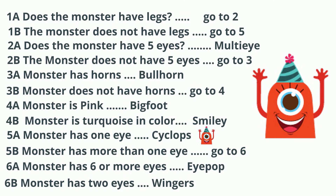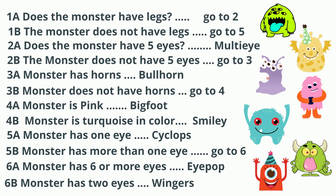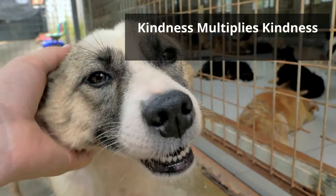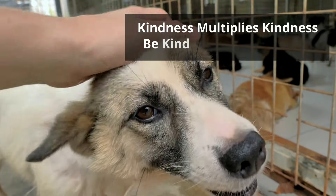You could do the same thing for the rest of the seven monsters. To recap: every single time, start at question 1a, and then it will tell you where to go. At each new number, always start at the a question, and if you can't answer yes to that, move to the b question. Thanks for watching, and remember, kindness always multiplies kindness — be kind to someone today.